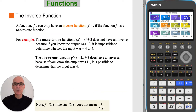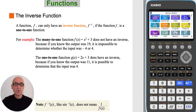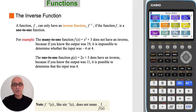A function can only have an inverse function if the function is a one-to-one function. For example, the many-to-one function f shown does not have an inverse, because if you know the output was 19, it's impossible to determine whether the input was negative 4 or 4. Whereas the one-to-one function g of x shown does have an inverse, because if you know the output was 11, then you know that the input value must have been 4.